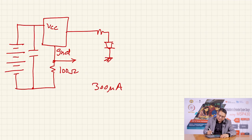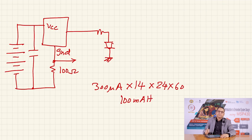So 300 microamperes into 14 days into 24 hours into 60 minutes will give you roughly 100 milliamp-hour battery capacity. So this is the kind of performance you can expect out of a simple battery that you can create on your own.